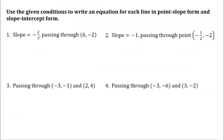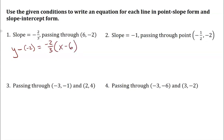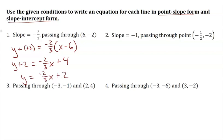A few examples. With slope m = negative 2/3 and point (6, -2), in point-slope form: y minus negative 2 equals negative 2/3 times (x minus 6), which simplifies to y plus 2 equals negative 2/3 times (x minus 6). For slope-intercept, distribute to get y plus 2 equals negative 2/3 x plus 4, then subtract 2 from both sides to get y equals negative 2/3 x plus 2.